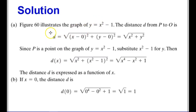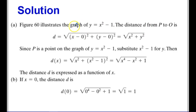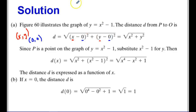Here's how we do this. I'm going to use the distance formula, which is d equals the square root of the change in x values squared plus the change in y values squared. My first point is at (x, y) and my second point is at the origin. So I get x and y for that point, and the origin is at (0, 0). Then I can simplify to get the square root of x squared plus y squared.